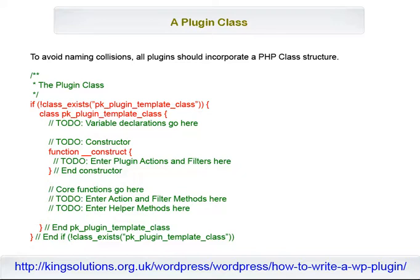Here is the outline for the code we will be using to set up our plugin class structure. This code first checks for the existence of a class named PKPluginTestClass, and if the class doesn't exist, the class is created. Notice the placeholders within the class for variable declarations, the class constructor, and other functions. We will be using these placeholders later.